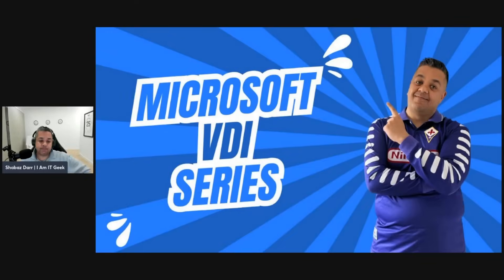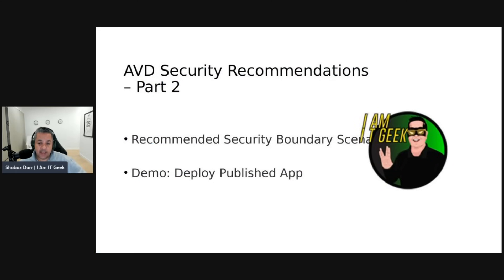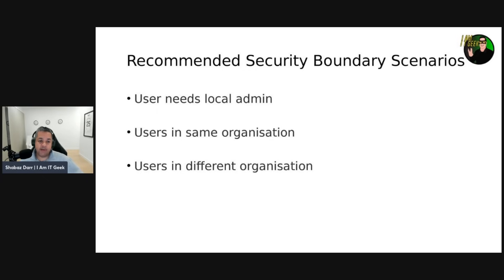We're talking about security. In the last episode we started talking about AVD security recommendations, so we're going to do the second part of that and then do a demo as well. This is part two of the AVD security recommendations. First we'll talk about recommended security boundary scenarios, and then do a demo around published apps.